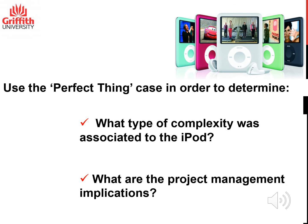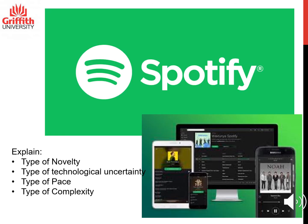Please use the Perfect Think case in order to develop the two questions related to project complexity — we will discuss these aspects during our workshops and collaborations. Now, think about the Spotify case and apply all four dimensions from the Diamond model: novelty, technological uncertainty, pace, and complexity. You can find a lot of information regarding Spotify's business model on the web.